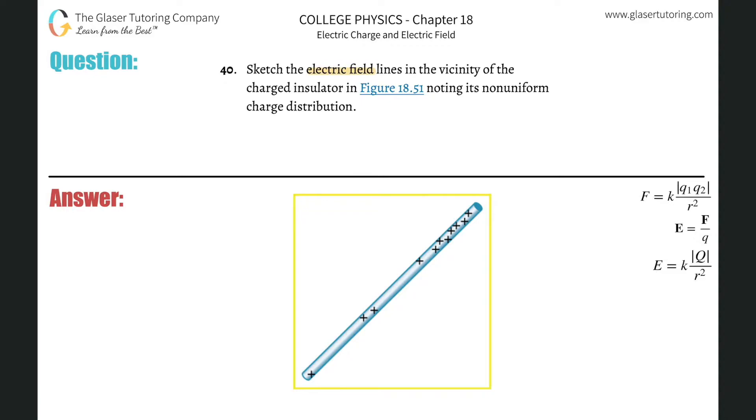Number 40, sketch the electric field lines in the vicinity of the charge insulator noting its non-uniform charge distribution.